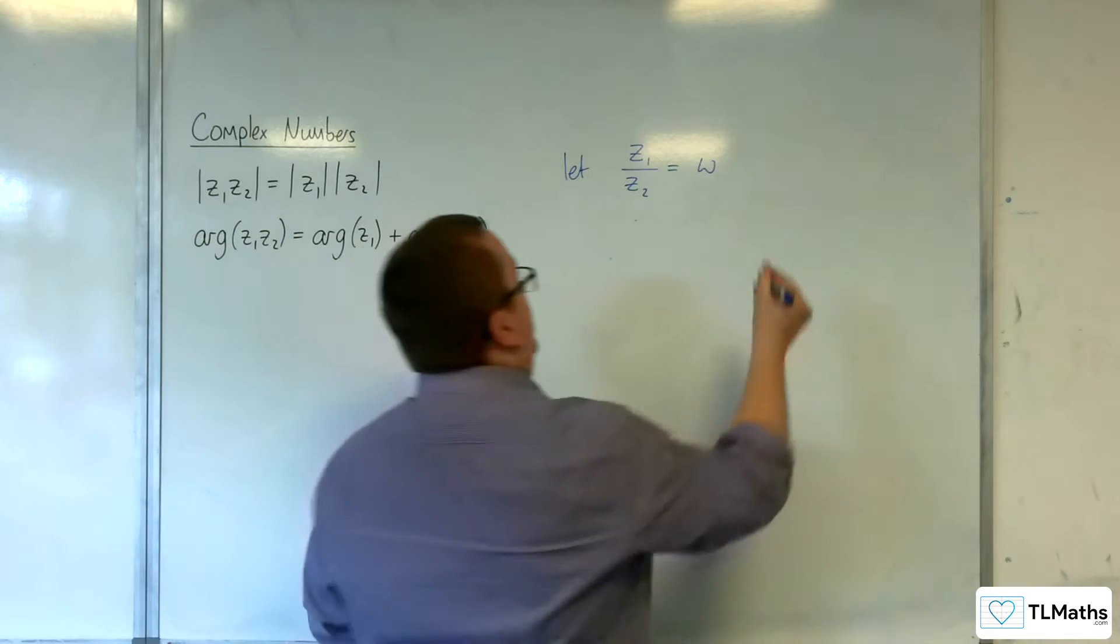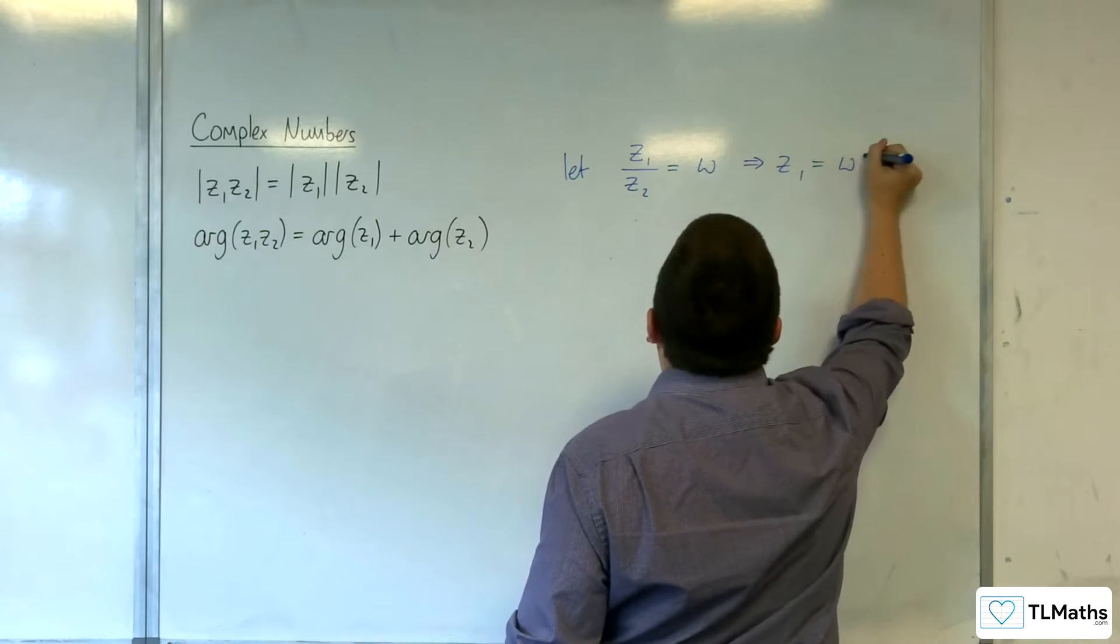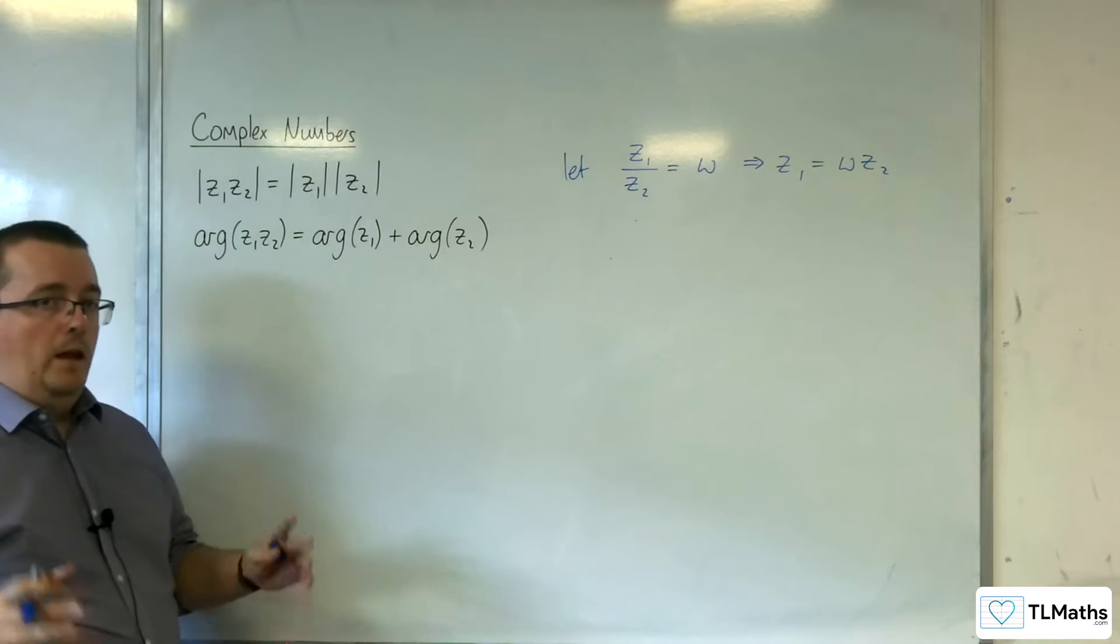The consequence of that, of course, is that that implies that Z1 is equal to W times Z2. So we can rewrite it like that.